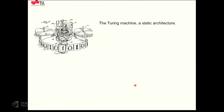The way we think about computation is very much influenced by standard computation models in computer science, like the random access machine and the Turing machine — the classical model of computation in theoretical computer science. One key difference to stress is that the Turing machine is a static machinery, meaning the physical implementation does not change during computation.